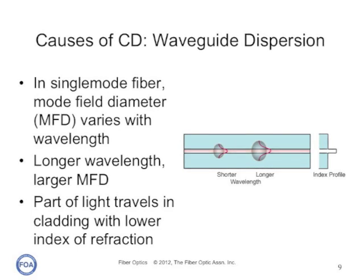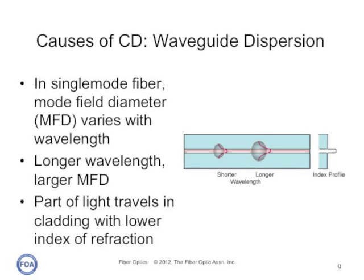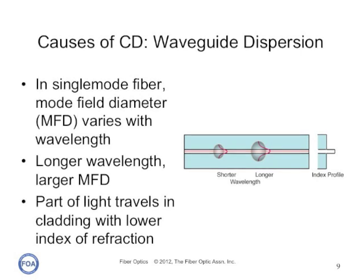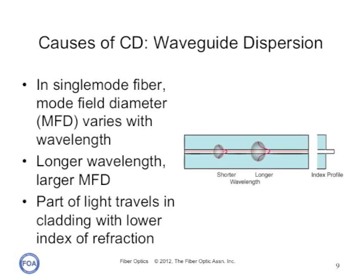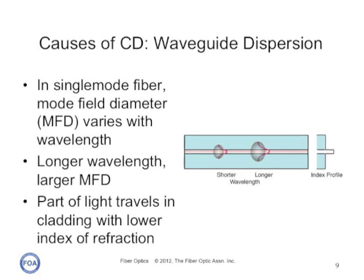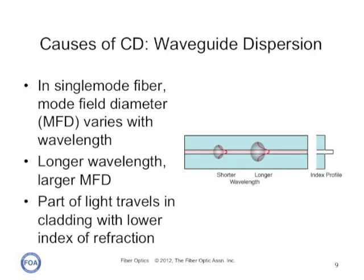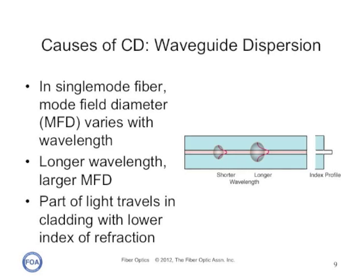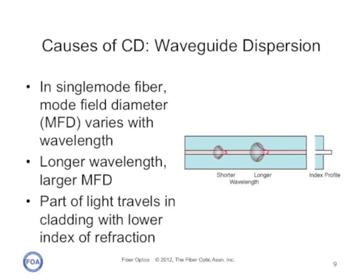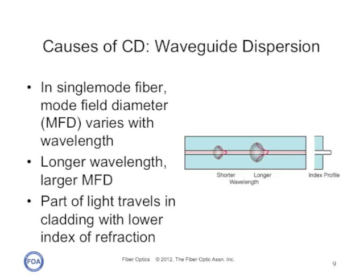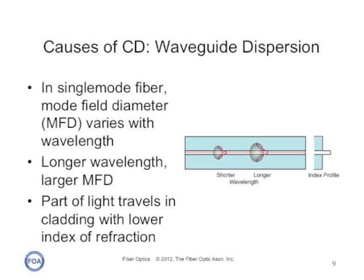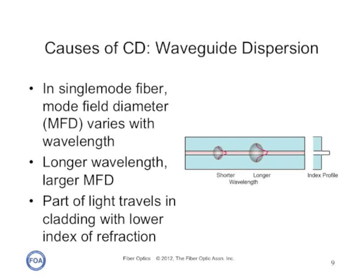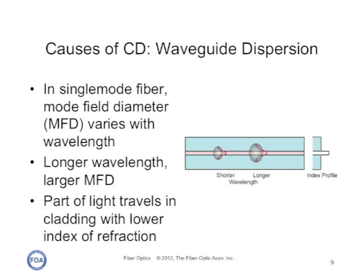Waveguide dispersion is a bit more complex. In single mode fiber, the wavelength of the light is not that much bigger than the core of the fiber, and the result is that light traveling down the fiber actually travels in an area that exceeds the diameter of the core — the area of which we call the mode field diameter. The mode field diameter is a function of the wavelength of the light, with longer wavelengths traveling in a larger mode field diameter. Part of the light is traveling in the geometric core, and part in the cladding. Since the core is made of a higher index of refraction glass than the cladding, the light in the cladding travels faster than the light in the core. Longer wavelengths have larger mode field diameters, so they suffer more material dispersion.